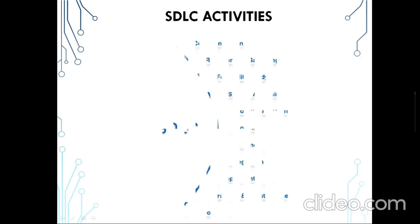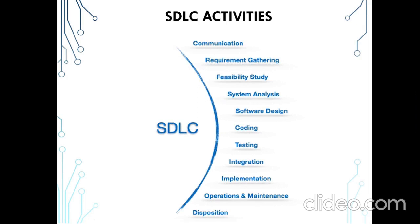The SDLC consists of a set of phases to be performed. It starts with communication — the initial idea or inception — followed by requirement gathering as the second phase, where we gather the required needs and wants from the client or end users. After gathering requirements, we move to the feasibility study, carried out by the system analyst or team of developers based on the requirement gathering.